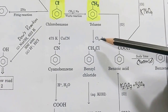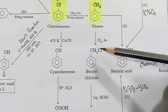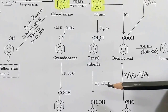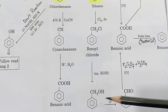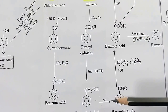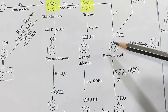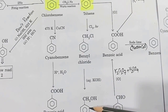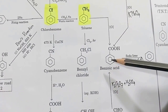From toluene: toluene can be treated with Cl2 and diffuse sunlight and the product is benzyl chloride. Benzyl chloride can be hydrolyzed in aqueous KOH medium to get benzyl alcohol. Benzyl alcohol can be oxidized by potassium dichromate/H2SO4 to get benzaldehyde. Benzaldehyde can further be oxidized to benzoic acid — primary aromatic alcohol oxidizes to aldehyde and aldehyde further oxidizes to acid.